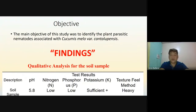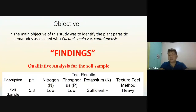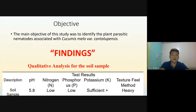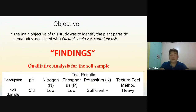For our findings, we will make a qualitative analysis for the soil sample. Soil sample pH was 5.8, nitrogen as well as phosphorus is low, potassium is sufficient, while the textural field moisture is heavy.